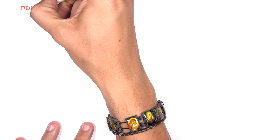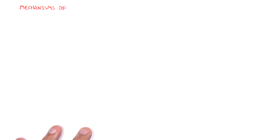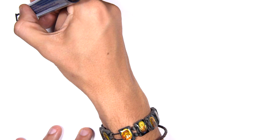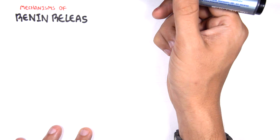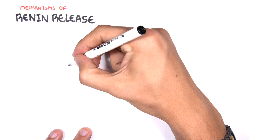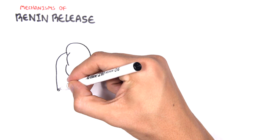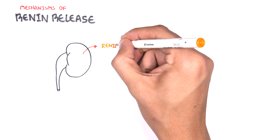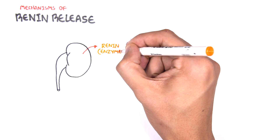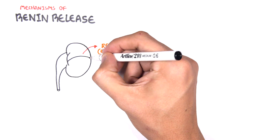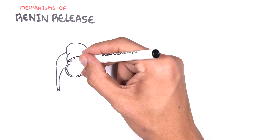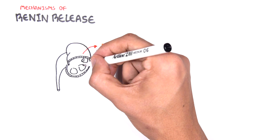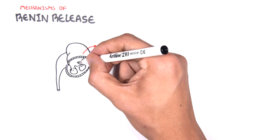In this video we are going to look at the mechanisms of renin release, and there are three main ones. But before we look into the mechanisms of renin release, let's understand where it comes from - the kidneys. The kidneys produce renin, and renin is an enzyme, an important enzyme that aims to increase blood pressure.